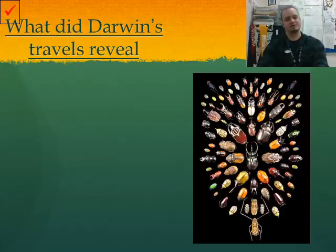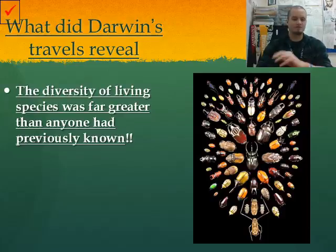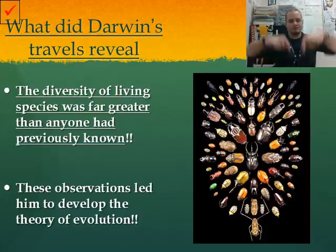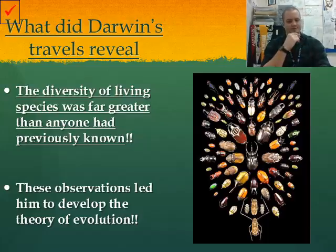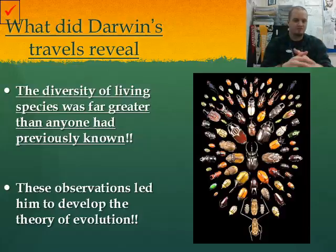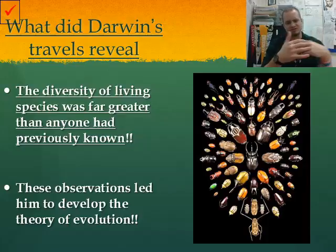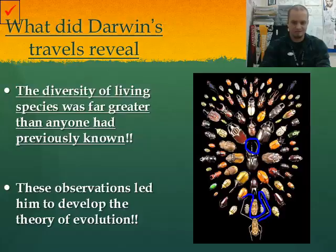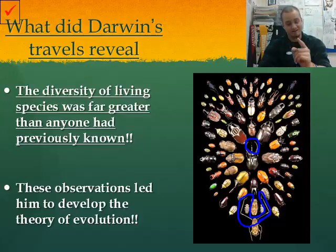What did Darwin's travels reveal? Why is all this important? What he found was the diversity of living species was far greater than anyone had previously known. These observations led him to develop the theory of evolution. Looking at beetles, we've got beetles of various sizes, various shapes, various structures — like the rhinoceros beetle with two large pincers and a horn, and others with gigantic legs. Each of these, though different in structure, is a beetle. That's diversity right there.